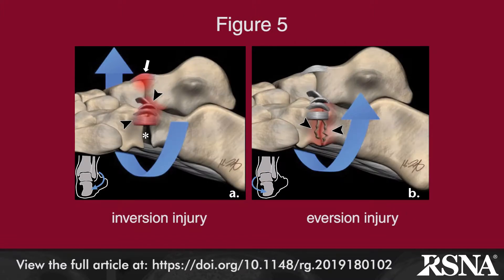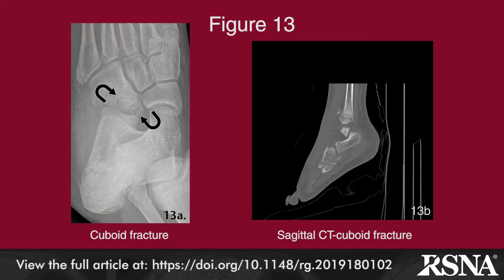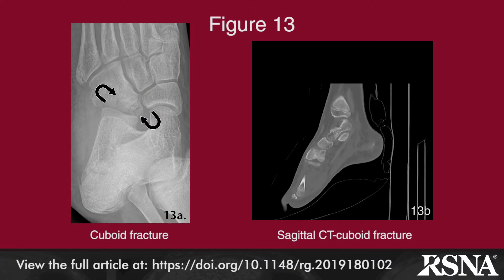The article then reviews the spectrum of traumatic midtarsal injuries, beginning with midtarsal sprains that may accompany and be masked by the more common lateral ankle sprain. The mechanisms of midtarsal sprains are illustrated, with multiple examples of the radiographic and MR findings due to both inversion and eversion injuries.